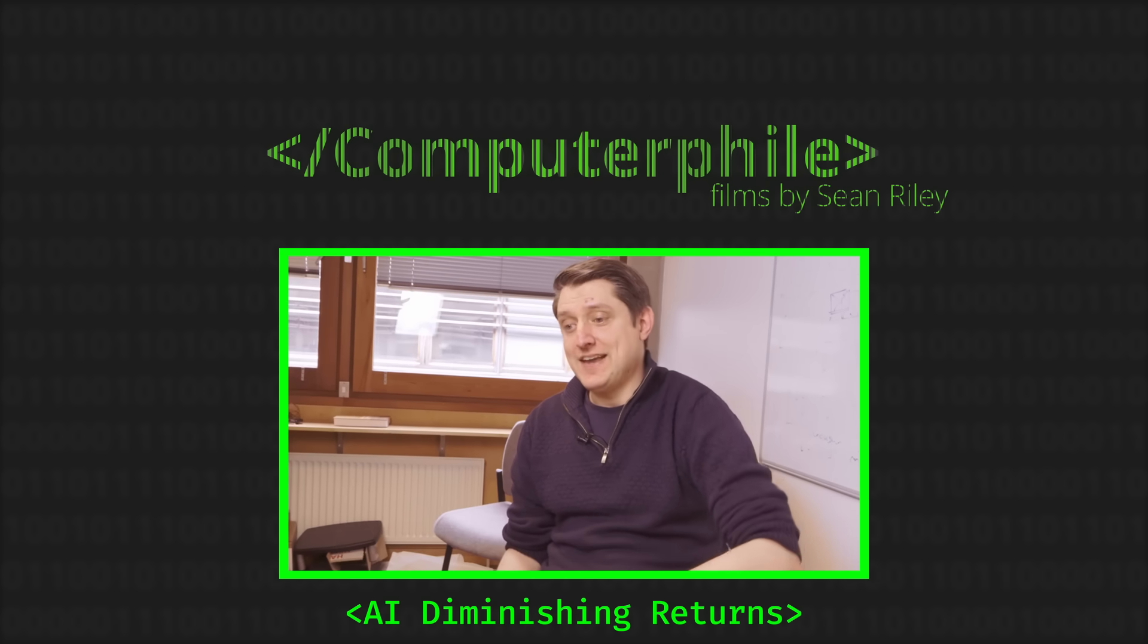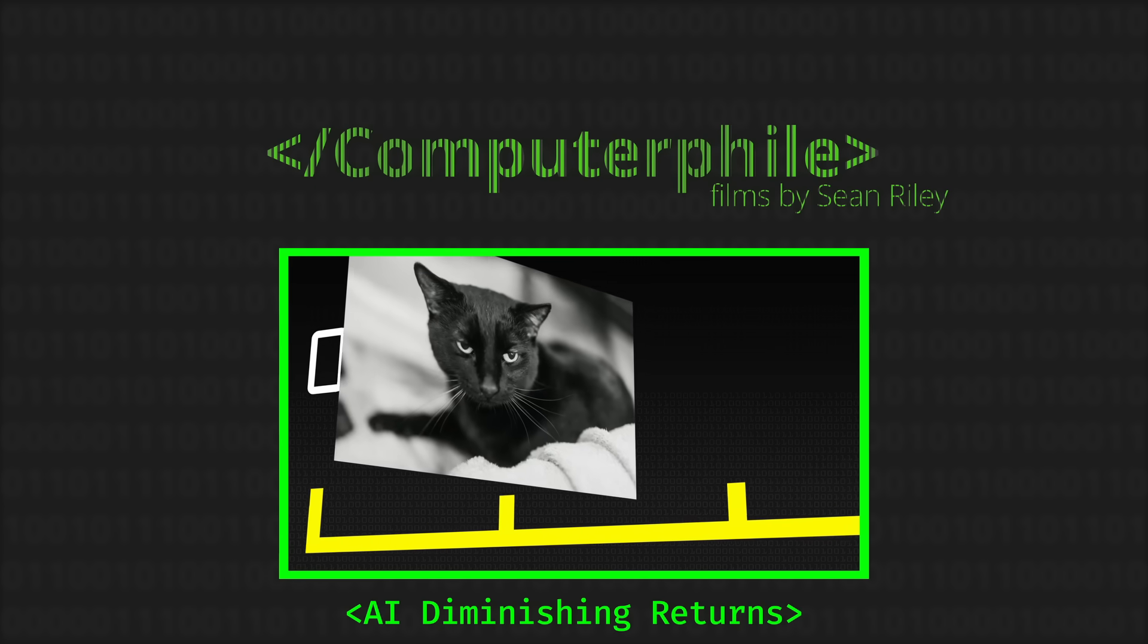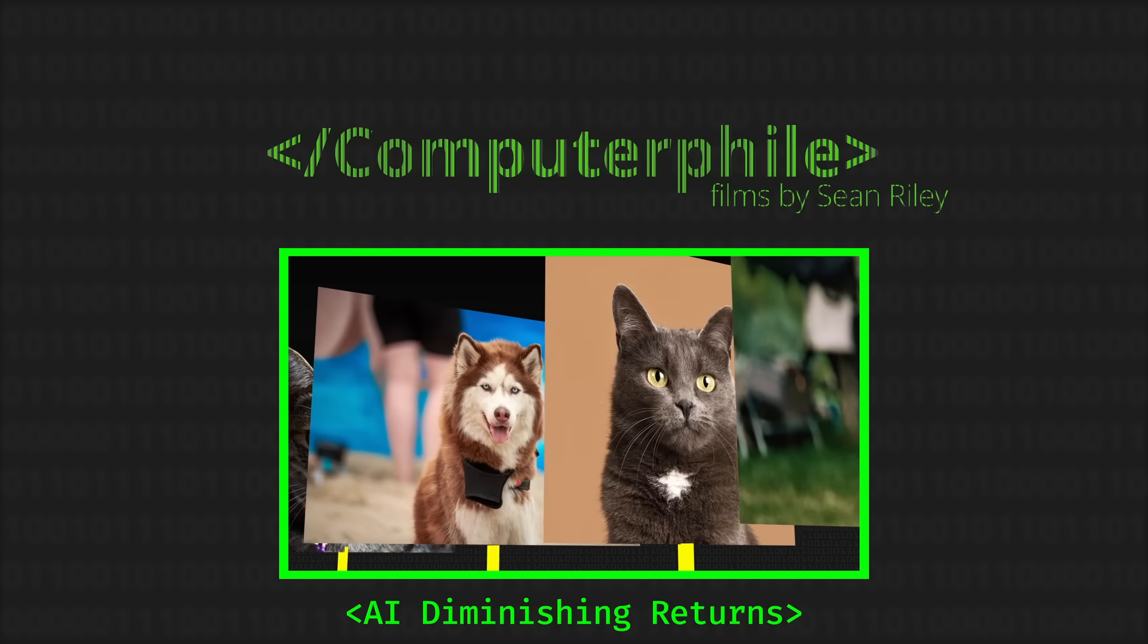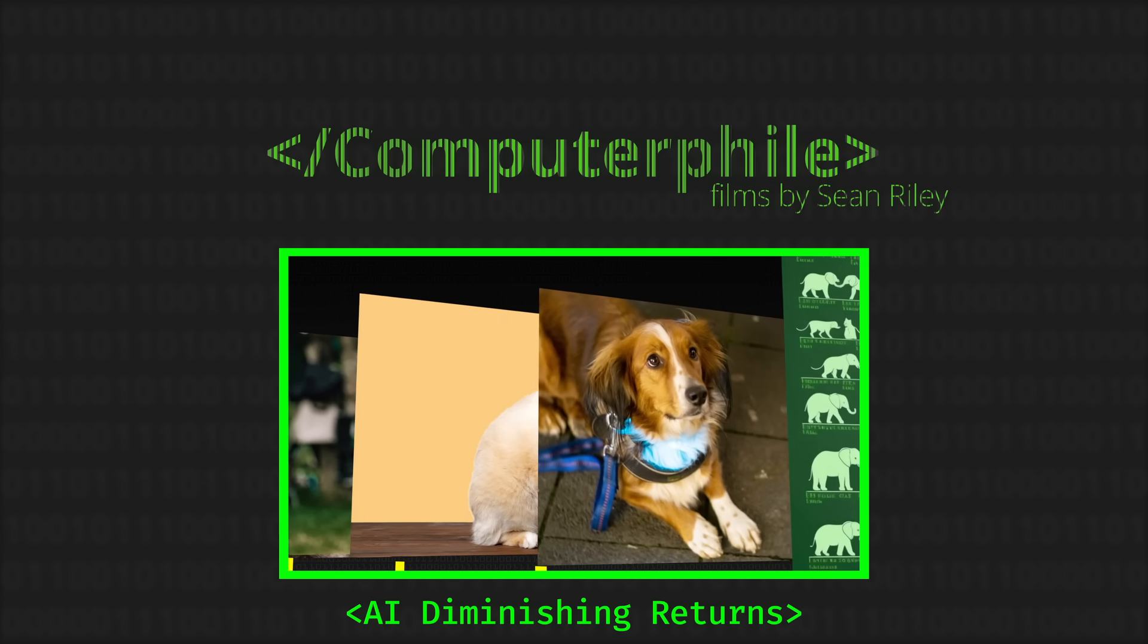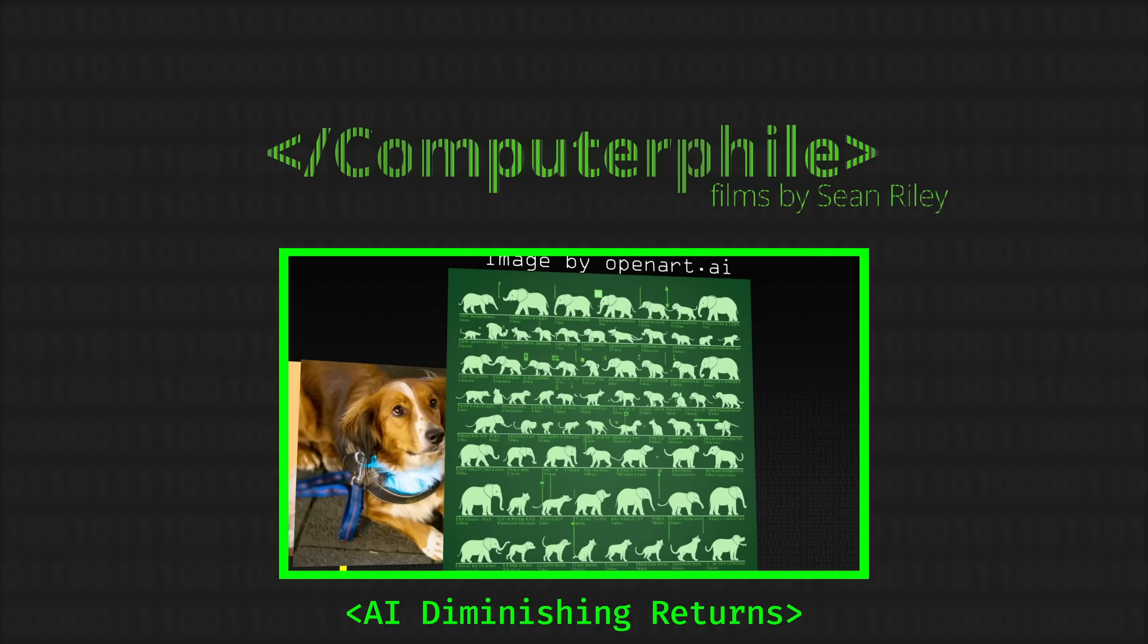That if you just keep adding more and more data, or bigger and bigger models, or a combination of both, ultimately you will move beyond just recognizing cats, and you'll be able to do anything. That's the idea. You show enough cats and dogs, and eventually the elephant just is implied.